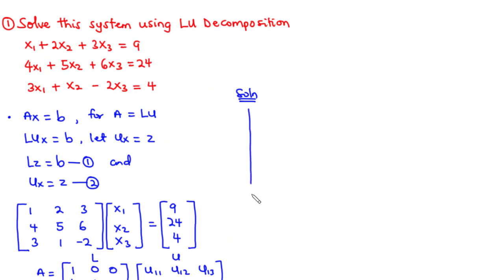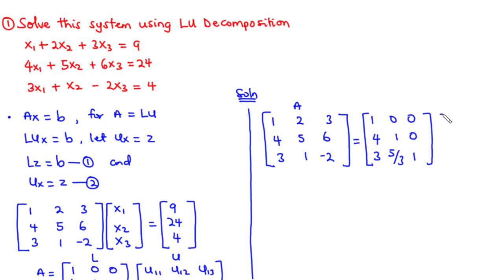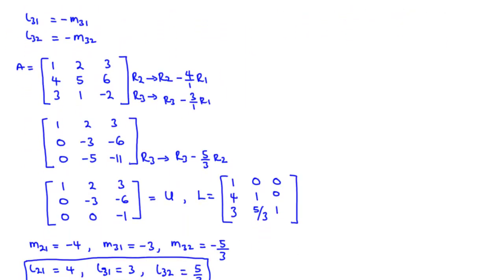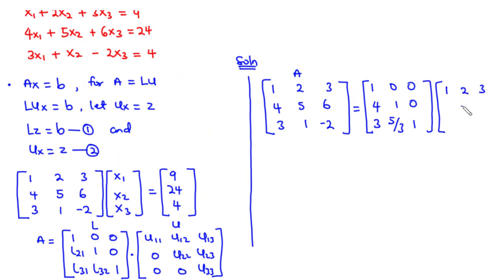Basically, we've been able to decompose the coefficient matrix 1, 2, 3, 4, 5, 6, 3, 1, negative 2 into a lower triangular matrix with elements 1, 0, 0; 4, 1, 0; 3, 5/3, 1, times an upper triangular matrix with elements 1, 2, 3; 0, negative 3, negative 6; 0, 0, negative 1. This is L times U.